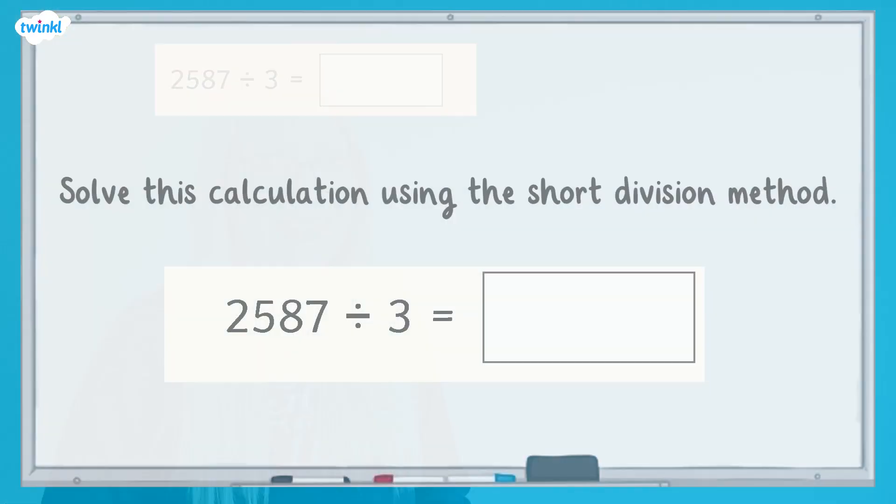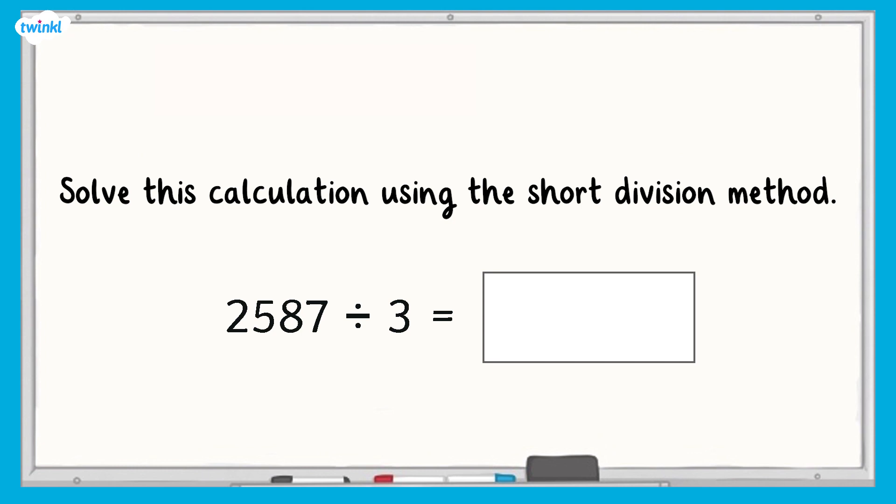Now it's your turn. Solve this calculation using the short division method. You can use counters to help if you need to. Two thousand five hundred and eighty seven divided by three. Pause here and have a go. You can unpause to see how you should have completed the calculation step by step.